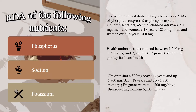Potassium: Children 400 to 4,500 milligrams per day; 14 years and up 4,700 milligrams per day; 18 years and up 4,700 milligrams per day; pregnant women 4,700 milligrams per day; breastfeeding women 5,100 milligrams per day.